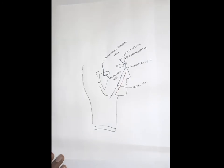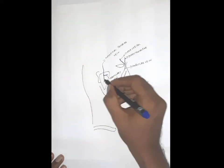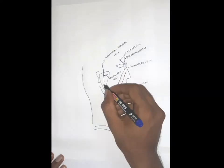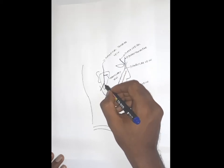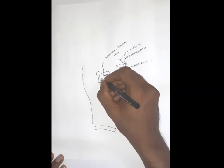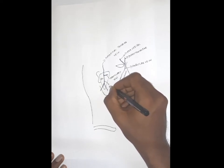Both the superficial temporal and maxillary veins join together to form another vein called the retromandibular vein. This formation and the termination of the retromandibular vein happen inside the parotid gland.